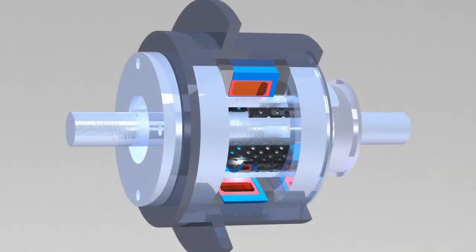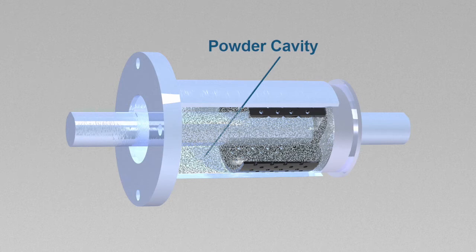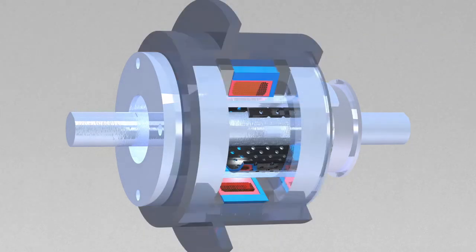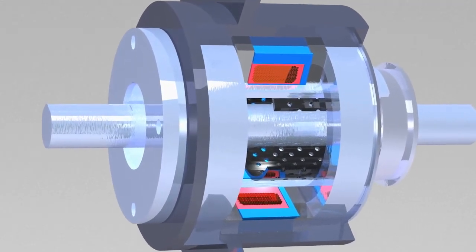Both magnetic particle clutches and brakes operate the same way. Magnetic particles, specialized iron ore powder, are located in the powder cavity. Without any voltage current applied, powder particles are loose.